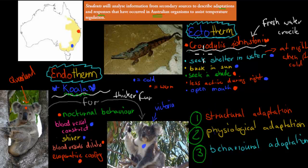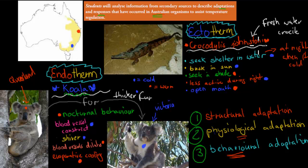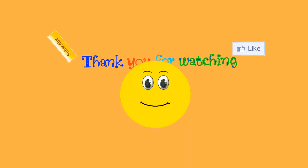As you can see, most of these adaptations for the crocodile are behavioral adaptations. Whereas for the endotherm — the koala — we've got behavioral, physiological, and structural adaptations, including blood vessels dilating, evaporative cooling, shivering, and blood vessels constricting. That's because an endotherm can maintain its own body temperature, whereas an ectotherm has to use the environment to do that. For this dot point, you can use the examples of the koala and Crocodylus johnstoni, or the examples from the last video: the red kangaroo and the blue-tongued lizard. I hope that was useful. Thank you for watching.